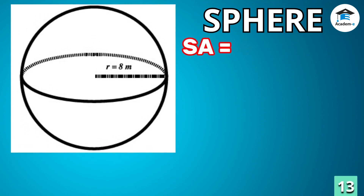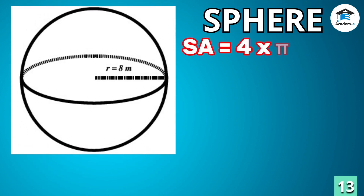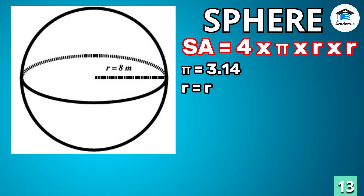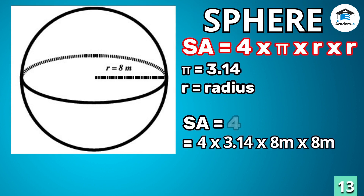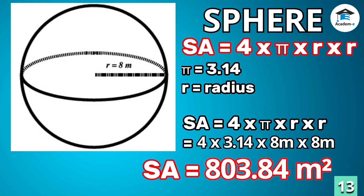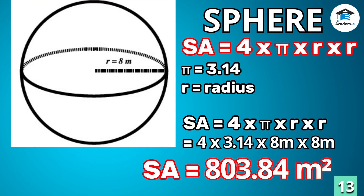Sphere: to get the surface area of a sphere, multiply 4 times pi times radius times radius. Therefore, the surface area of the sphere is 803.84 square meters.